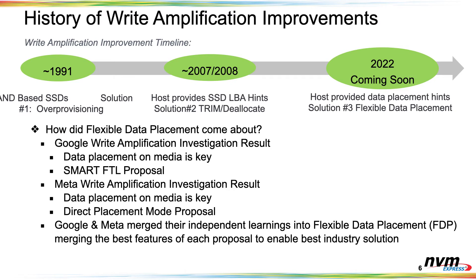A little bit about the history of write amplification and NVMe. In the beginning, in the early 90s, the only tool to deal with this was over-provisioning — if you wanted to reduce write amplification, you just needed to put larger amounts of over-provisioning into the drive. Around 2007–2008, TRIM operations were introduced, which is an indication from the host that some data is no longer valid. That allowed the drive to take advantage of that extra space immediately and reduce write amplification.